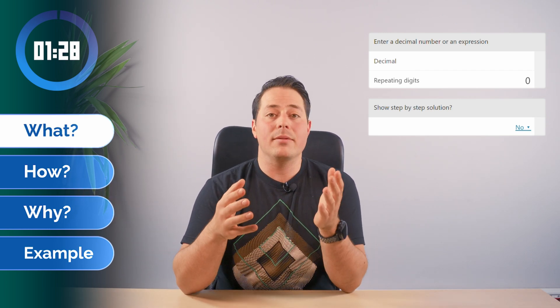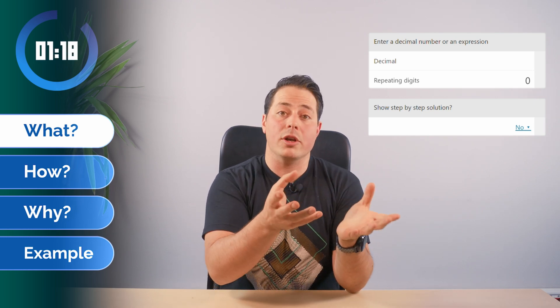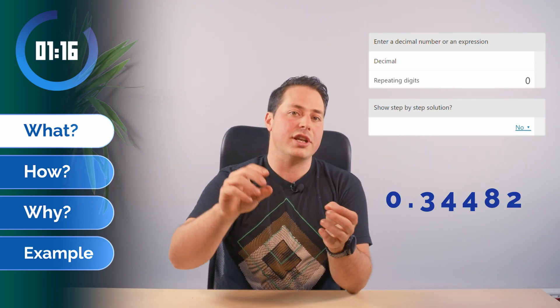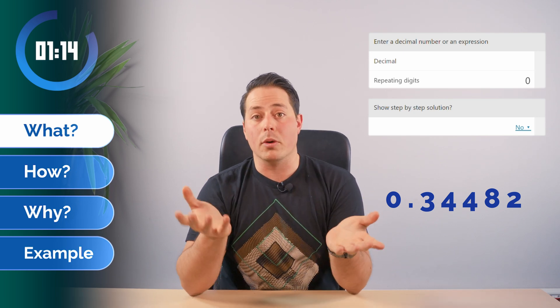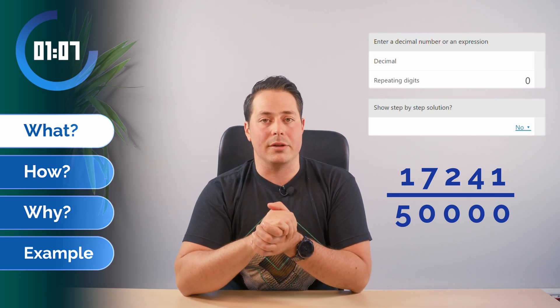So we start with what. What this calculator does is convert from the decimal representation of a number to the fractional representation of a number without changing the value. The decimal representation is a collection of digits separated by a dot, or in most countries a comma, and the fractional representation is just a number on top of another number with a line in the middle.